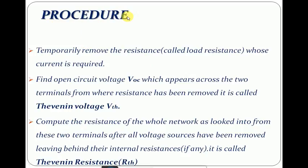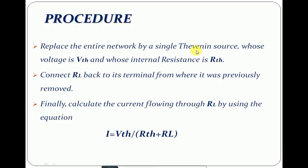Next, how do you Thevenize a circuit, or what is the procedure for making a Thevenin equivalent circuit? Step one: temporarily remove the load resistance whose current is required. Step two: find the open circuit voltage VSE across the load terminal from where the load was removed. The open circuit voltage is also called Thevenin voltage and is represented by VTH. Step three: calculate the total equivalent resistance across the load terminal after removing all voltage sources, leaving behind their internal resistance if any. This is called Thevenin resistance, represented by RTH. Step four: replace the entire network by a single Thevenin source with voltage VTH and internal resistance RTH. Finally, connect RL back to its terminal and calculate the current flowing through RL using the equation I = VTH / (RTH + RL).